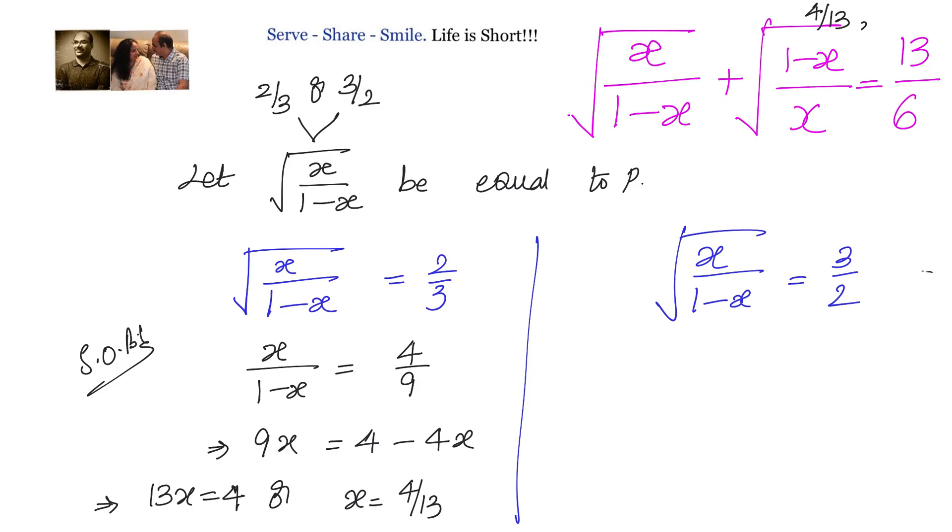Let us find out the other one from here. Again we will square it on both sides. Squaring on both sides, we will have x by 1 minus x equals to 9 by 4. We will do cross multiplication, we get 4x equals to 9 minus 9x, or can we say 13x equals to 9, or x equals to 9 by 13.